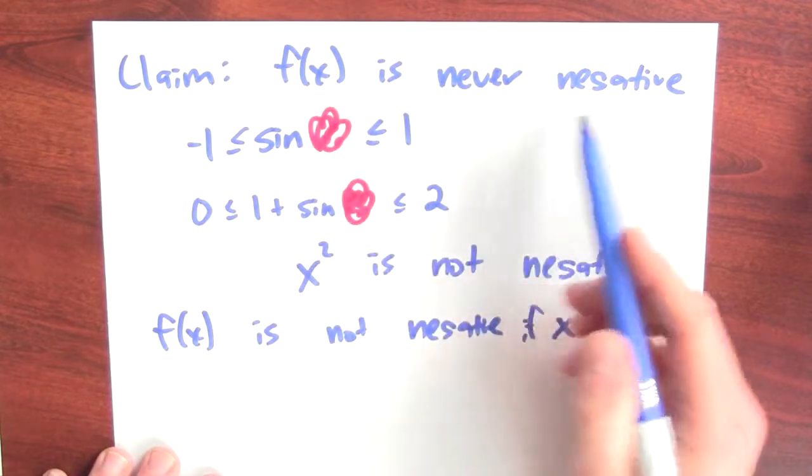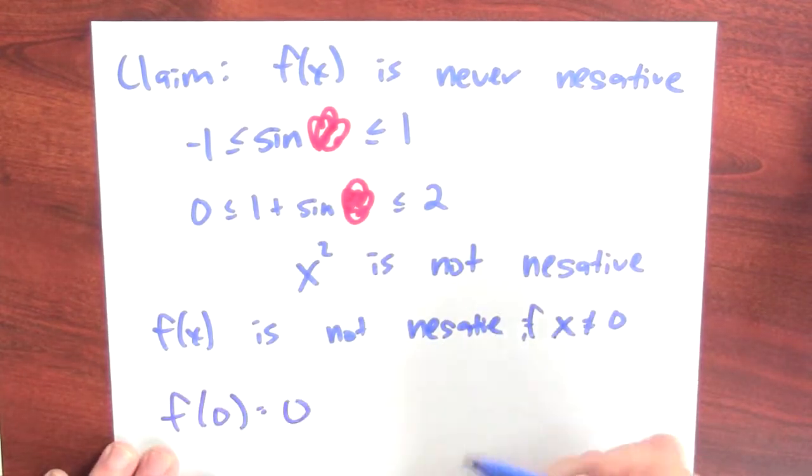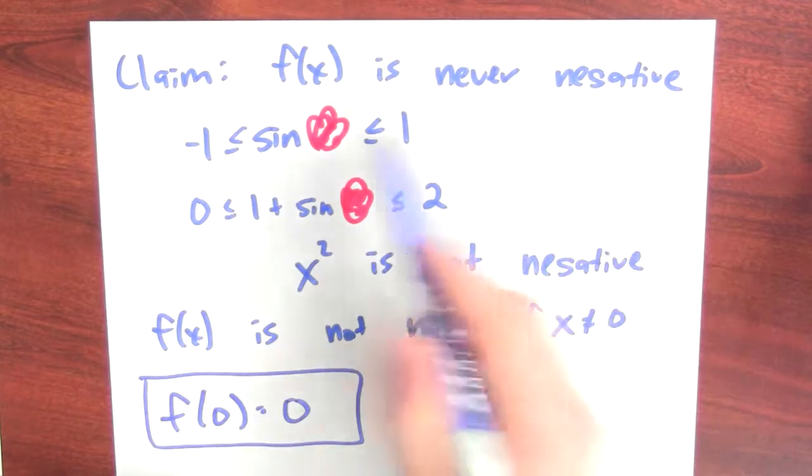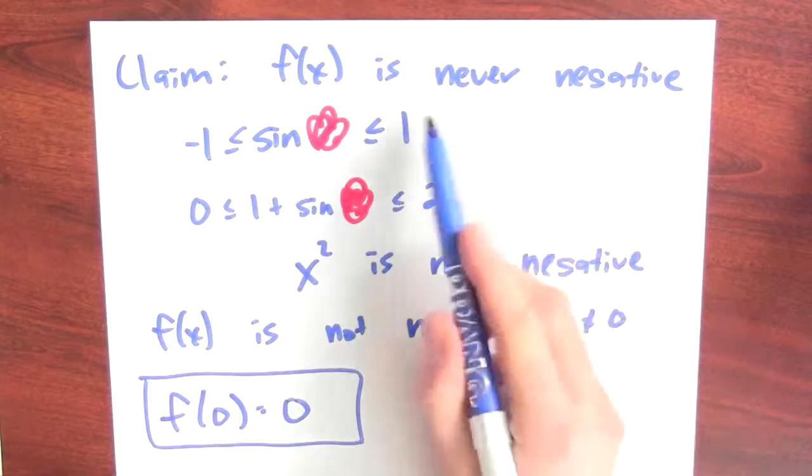Now, if f of x is never negative and f of 0 is equal to 0, then I know that this must be the smallest possible output value for the function. The only numbers that are smaller than 0 are negative numbers, and the output of this function is never negative.